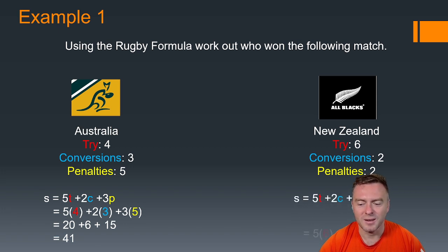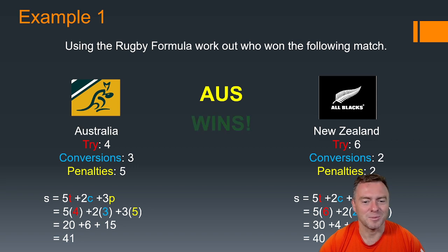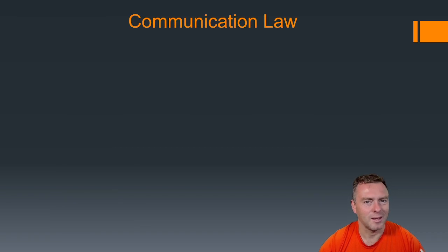Whereas the New Zealand side, we get 5 times 6 plus 2 times 2 plus 3 times 2, which gives us 30 + 4 + 6, which gives us 40. And look at that, the good old Wallabies won. So hopefully that gives you a little bit of insight into how a formula could be used in the real world.